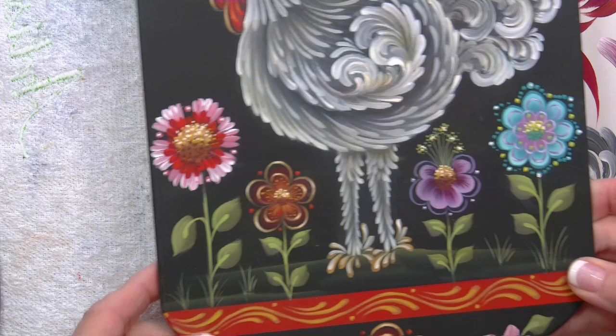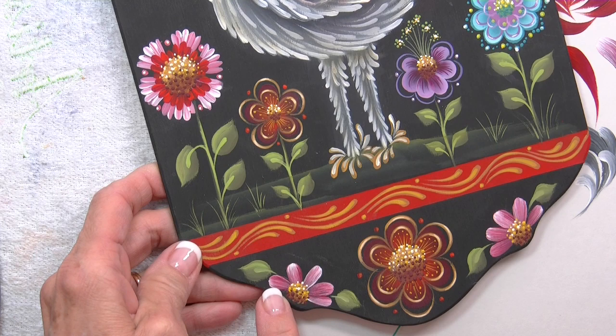This is a piece that I'm going to be teaching in Oklahoma. It has tipped strokes here in the flower and on the tail feathers on the chicken.